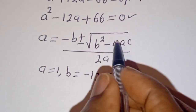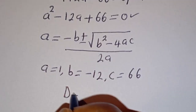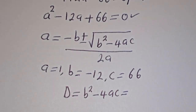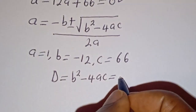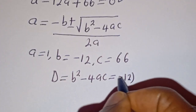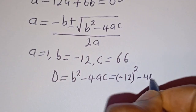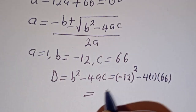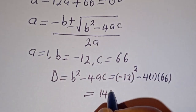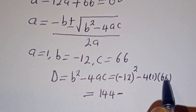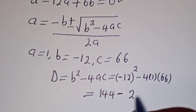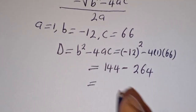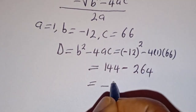Here we have b squared minus 4ac, which is the discriminant. D equals b squared minus 4ac. That is (minus 12) squared minus 4 times 1 times 66. This equals 144 minus 264, which gives minus 120.